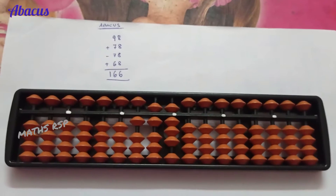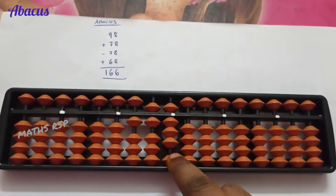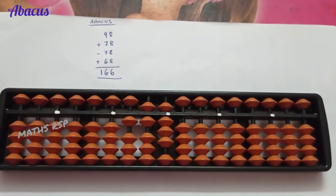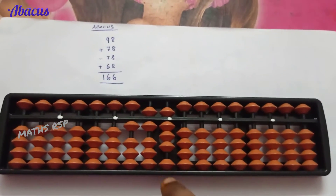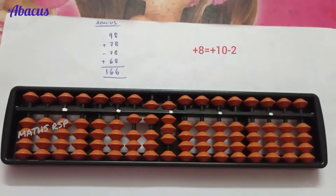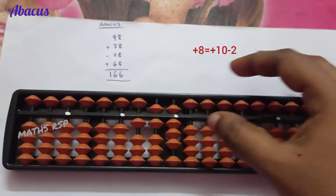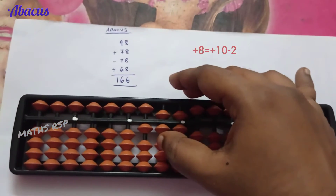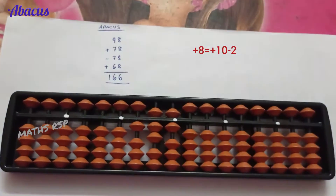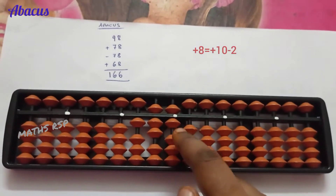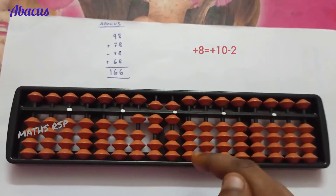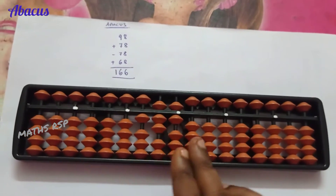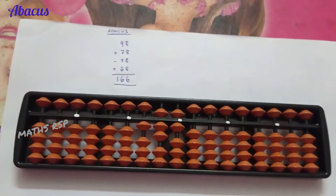Next, in the one's strot we need to add eight beads, but only one bead is available so we cannot add eight directly. Hence we apply the big friend formula — eight's big friend is two, so we remove two beads from the one's strot and add one bead in the ten's strot. That is plus 10 minus 2 equals 8 is added in the one's strot. Plus 78 is completed.